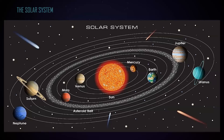Another topic related to space physics is the solar system. This is a very important topic as most of the questions come from this topic. Our solar system consists of the sun and all the objects which orbit it, including all the stellar objects orbiting the sun. There are eight planets — Pluto is not counted as a planet.